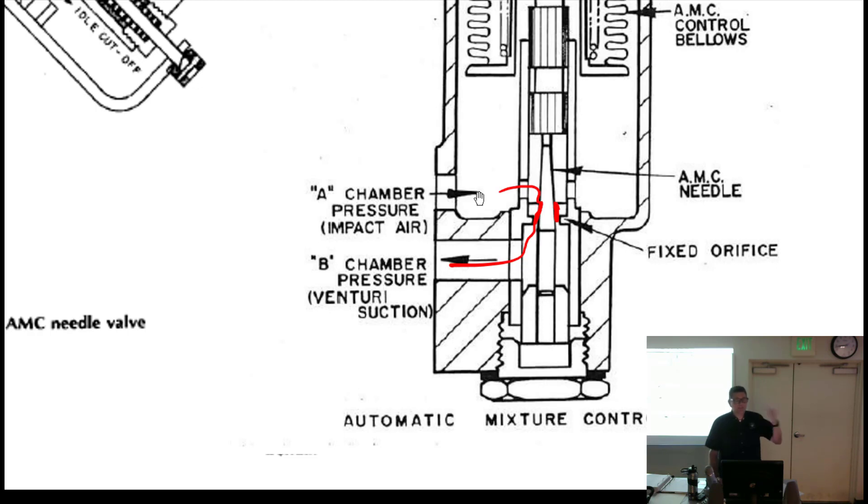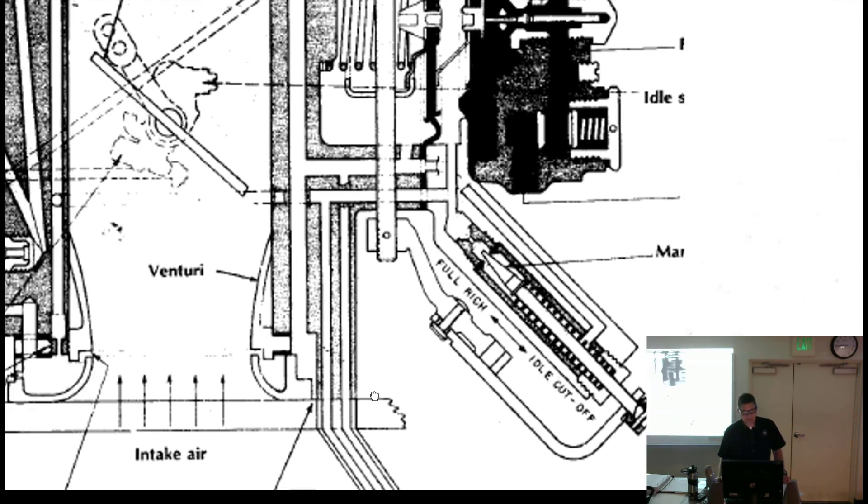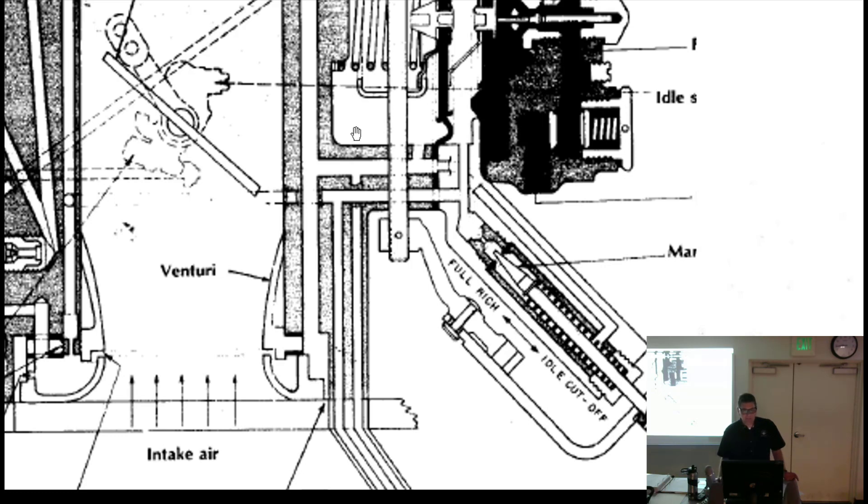Here we have a bellows control, potato chip bag. When we go up in altitude it's going to expand. The needle comes down opening up these two chambers, allowing pressure from A to bleed out to B which is suction.